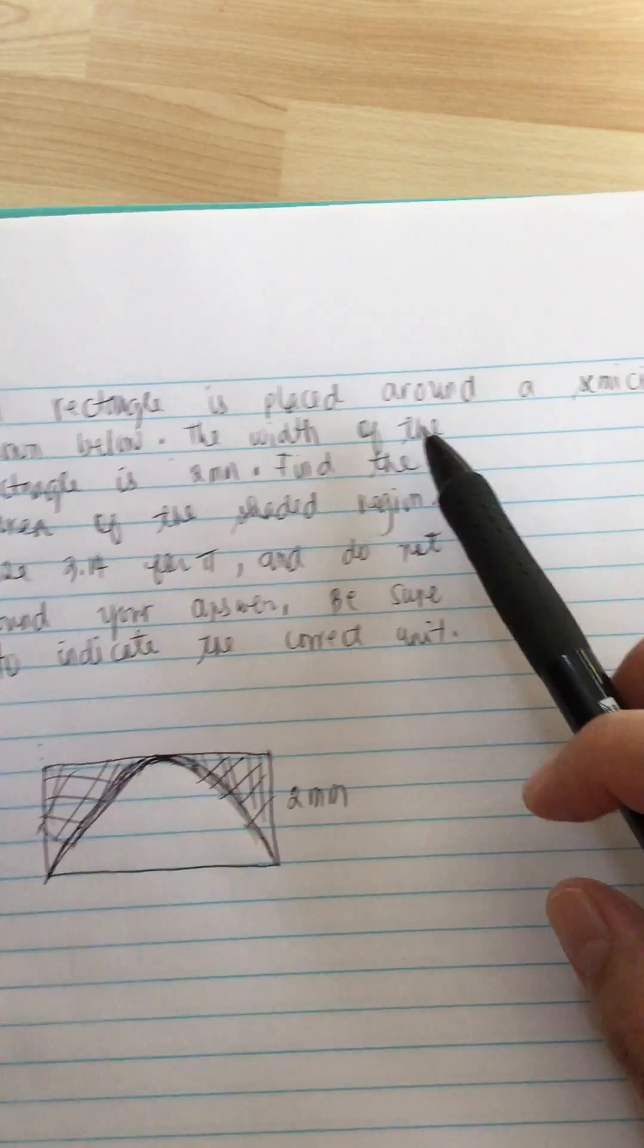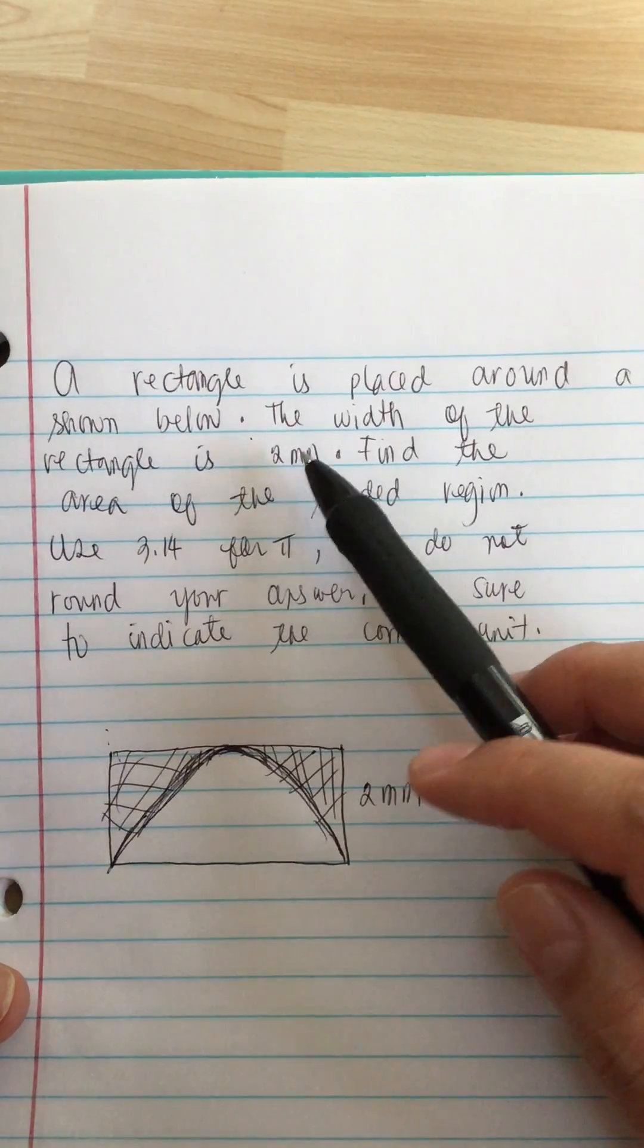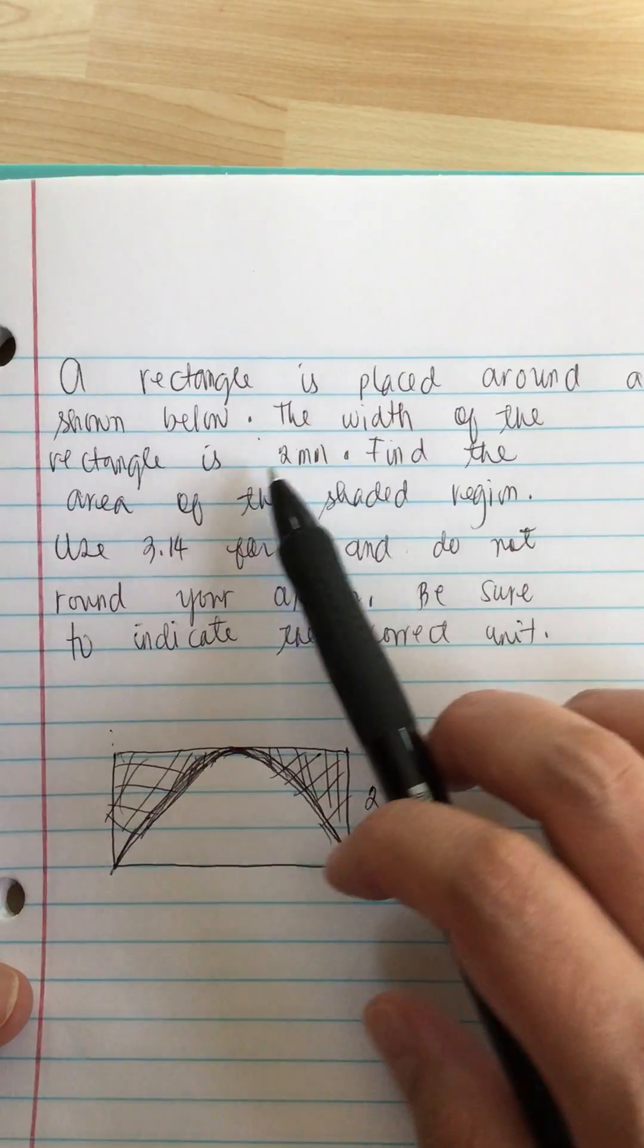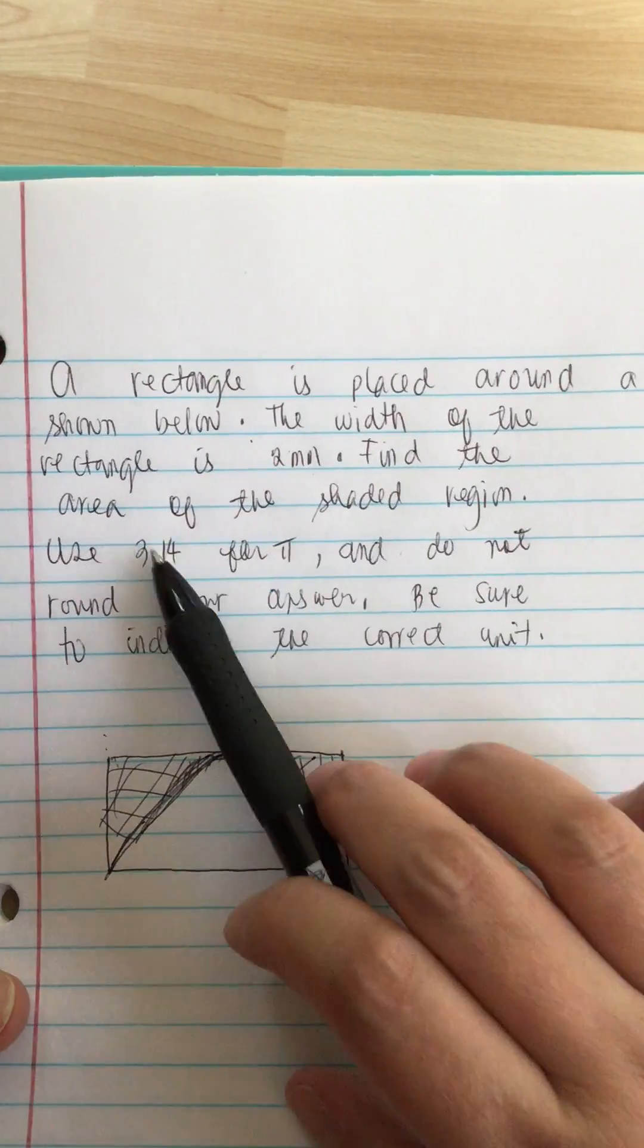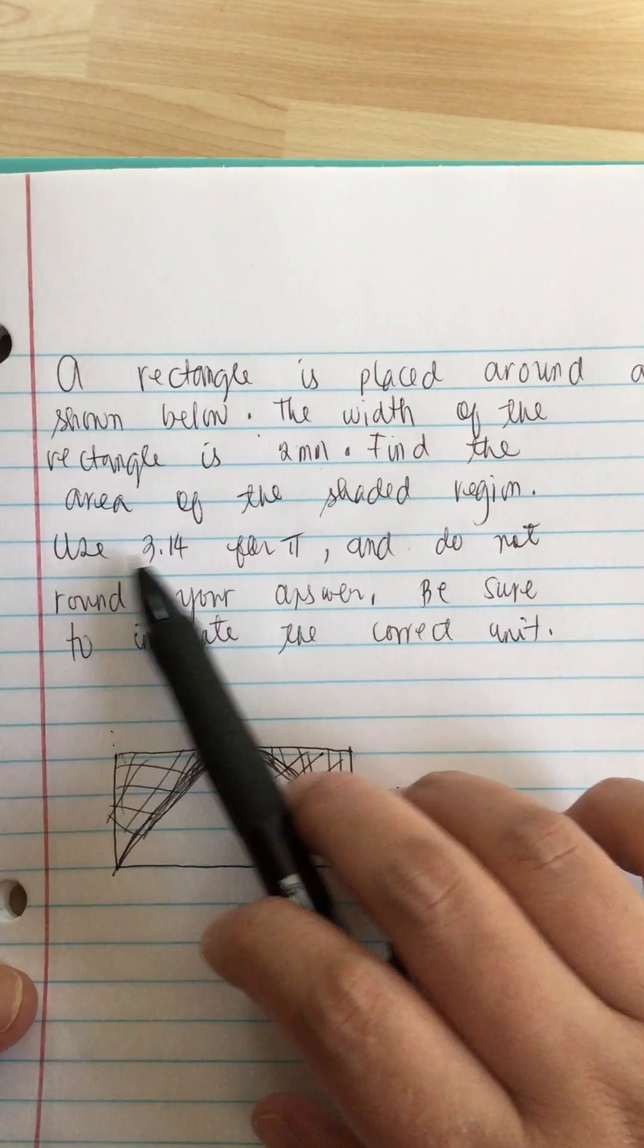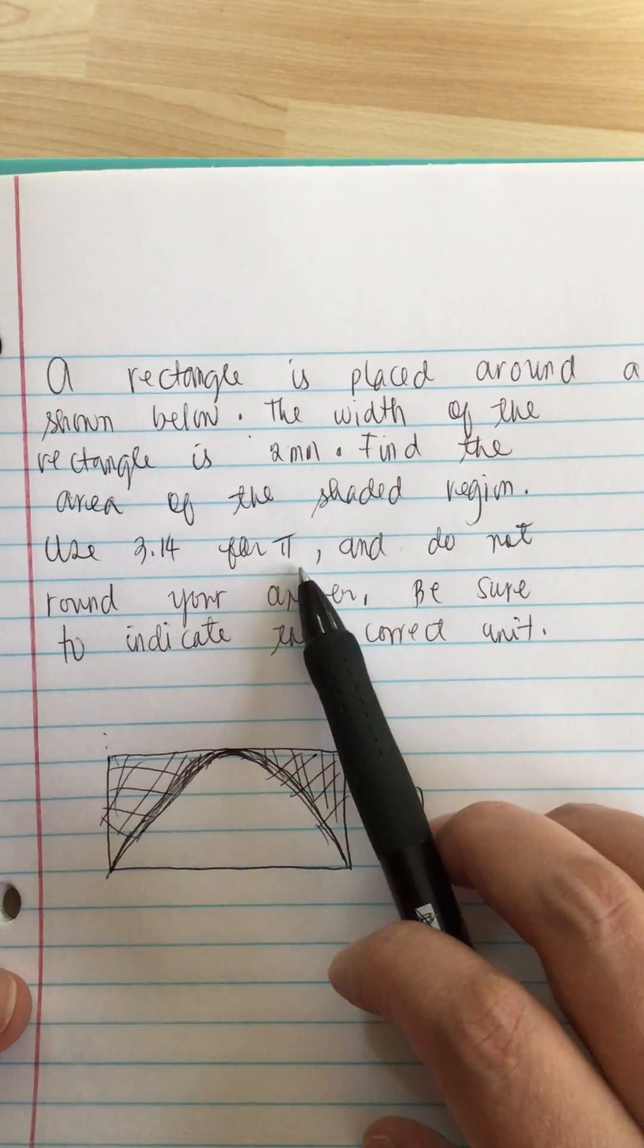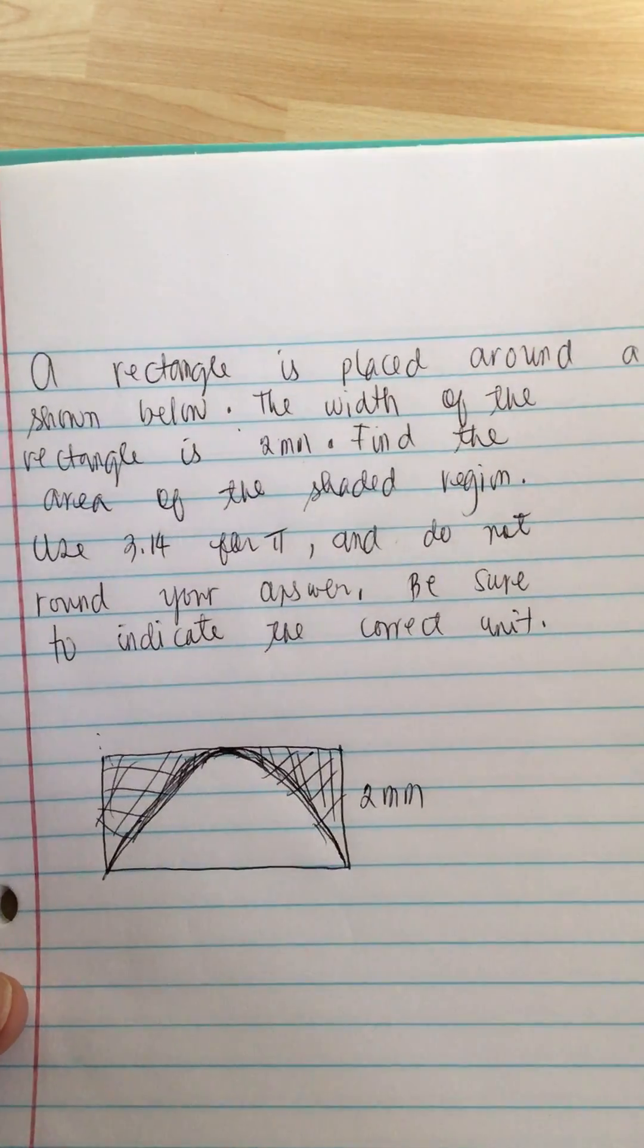A rectangle is placed around a semicircle as shown below and the width of the rectangle is 2mm. They want us to find the area of the shaded region and use 3.14 for pi and do not round your answer. Be sure to indicate the correct unit.